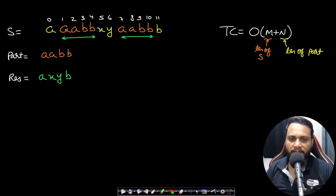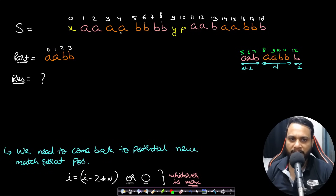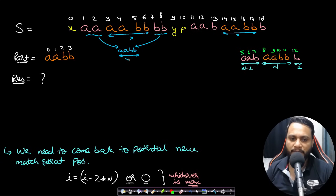If the given string is a simple one where we do not have to parse multiple times, I can just parse it once, remove all occurrences of the pattern, and get the result in a single parse with time complexity O(m + n). But with a more complex test case, in the first pass I will remove some 'aabb' patterns, and when those are removed, the 'aa' on the left side and 'bb' on the right side come together to form a new 'aabb', which becomes a new candidate to be removed.